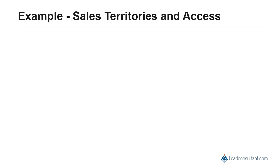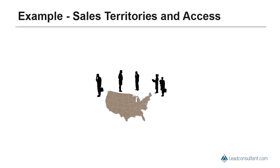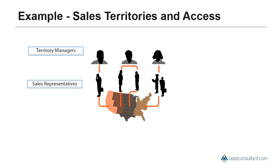In the first example, this organization has sales representatives who are assigned to different territories. These sales reps are also reporting to territory managers, as indicated in the diagram. Suppose we have different access and security requirements for territory managers and sales representatives.